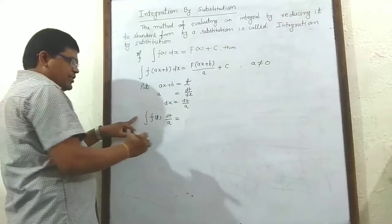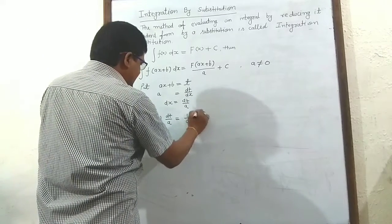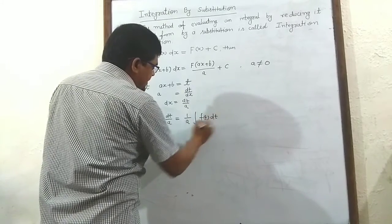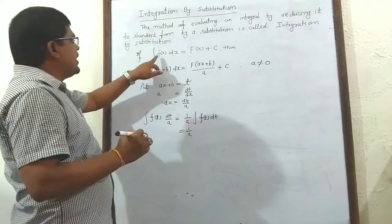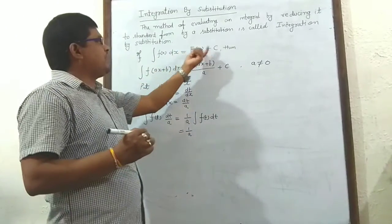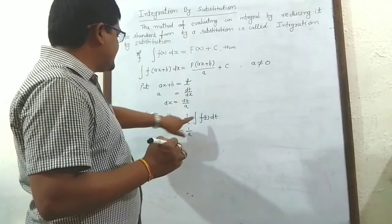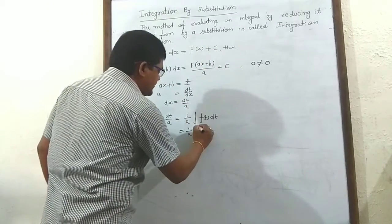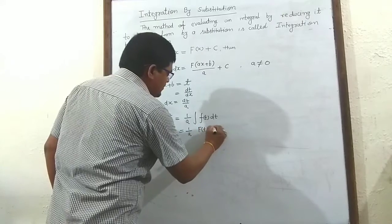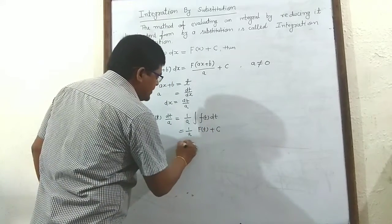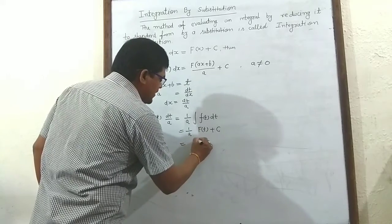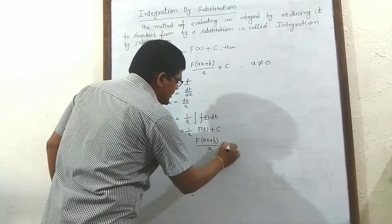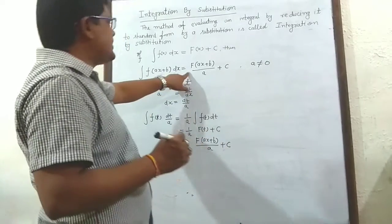Taking the constant out of integration — 1 upon a — we get the integral of F(t) dt, equal to 1 upon a. Now integration of f(x) dx equals F(x) plus c. Since the variable is now t, it becomes F(t) plus c. Putting the value back: F(ax + b) upon a plus c. This completes the proof.